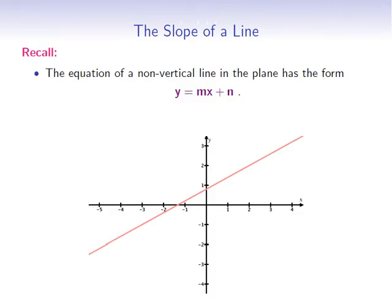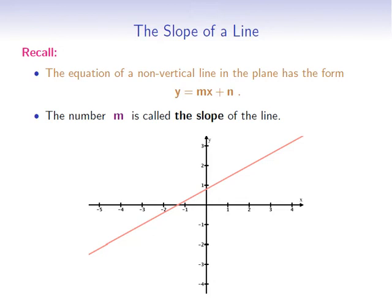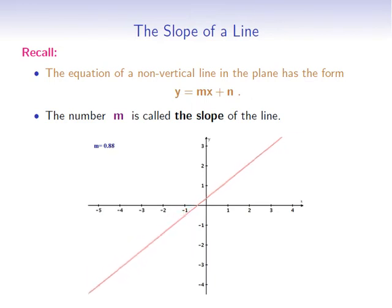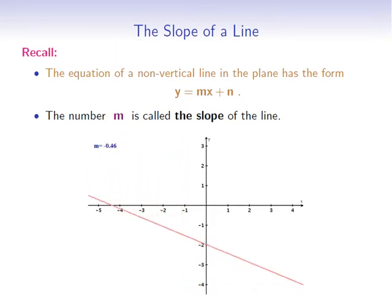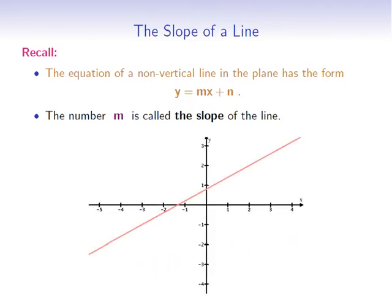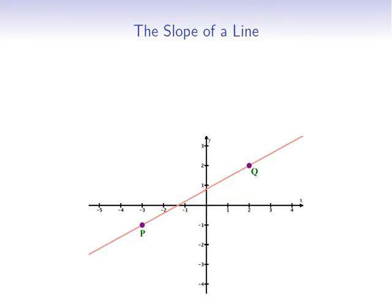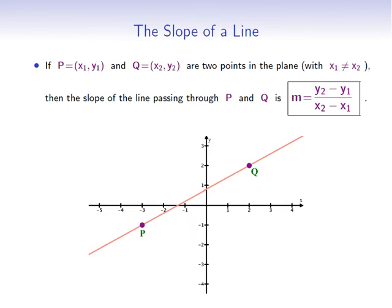Let's start by recalling what is the slope of a straight line in the plane. Recall that the equation of a non-vertical line in the plane has the form y = mx + n. The number m is called the slope of the line. The slope is positive when the line is increasing, negative when the line is decreasing, zero when the line is horizontal, and undefined when the line is vertical. If two points p = (x1, y1) and q = (x2, y2) are on the line with x1 ≠ x2, then the slope is (y2 − y1) / (x2 − x1).